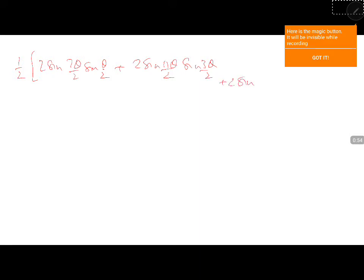So, 2 sin minus 2 sin 5 theta sin 2 theta. I always take larger angle as a, smaller angle as b. So, it will be easy for us for the substitution.